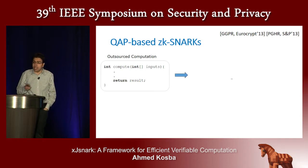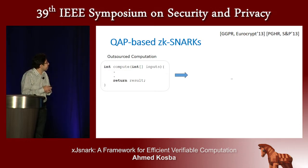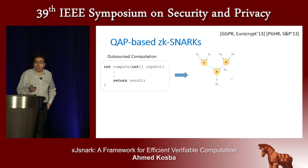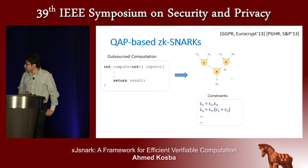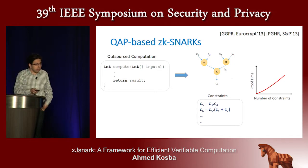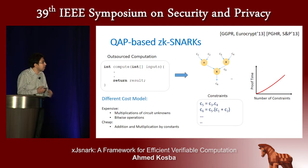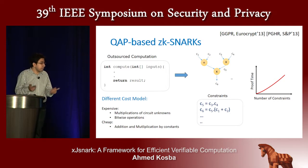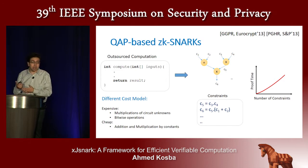We're going to focus on the front end — basically how we can use such a construction. Typically the computation to be verified is expressed in a high-level program and then compiled to an arithmetic circuit or a set of quadratic constraints over a finite field. This step has to be done carefully because the prover's time depends in a quasi-linear manner on the number of constraints or multiplication gates in the circuit. This has a different cost model than what we are used to in typical programs — for example, bitwise operations are very expensive, and multiplication of circuit unknowns is much more expensive compared to multiplication by constants.